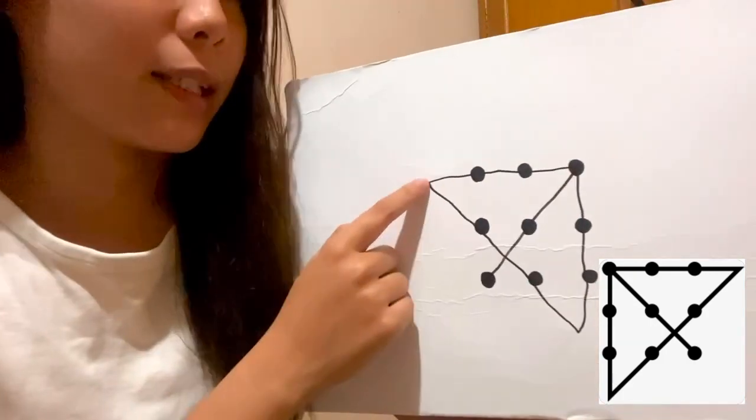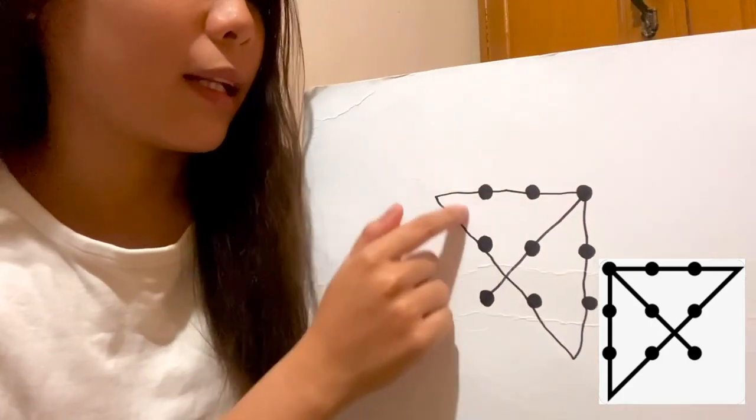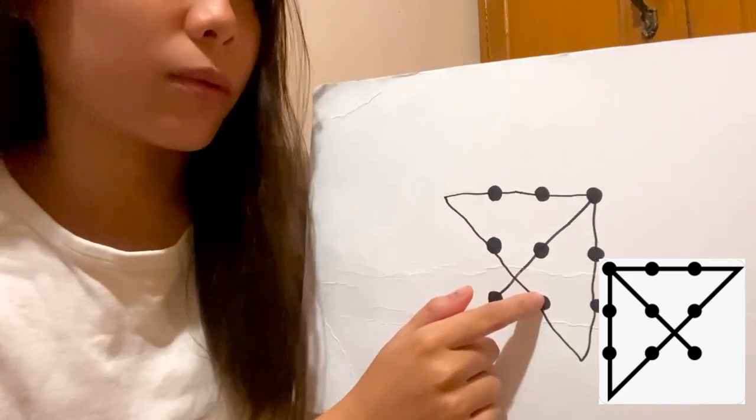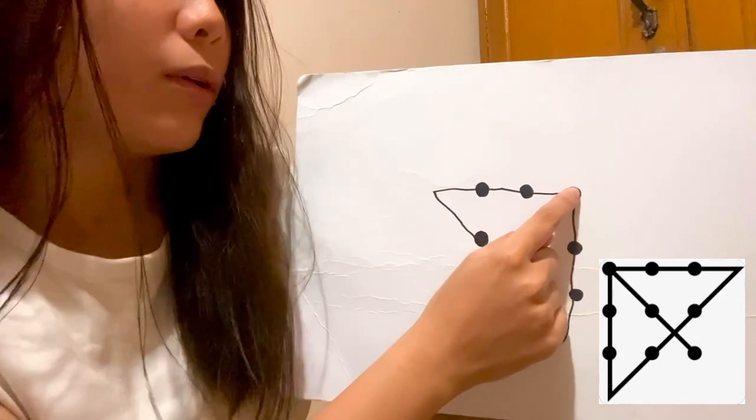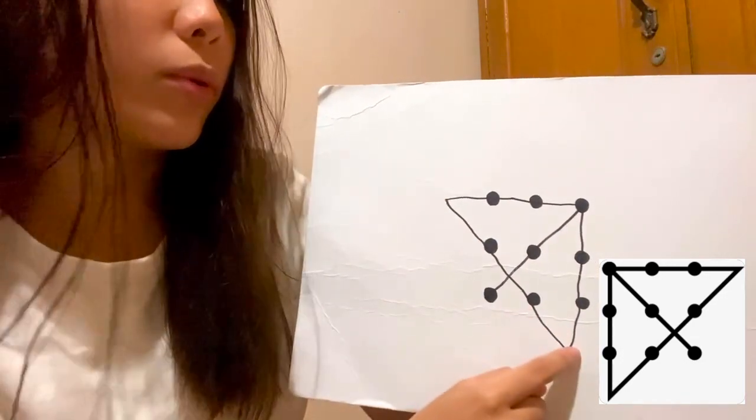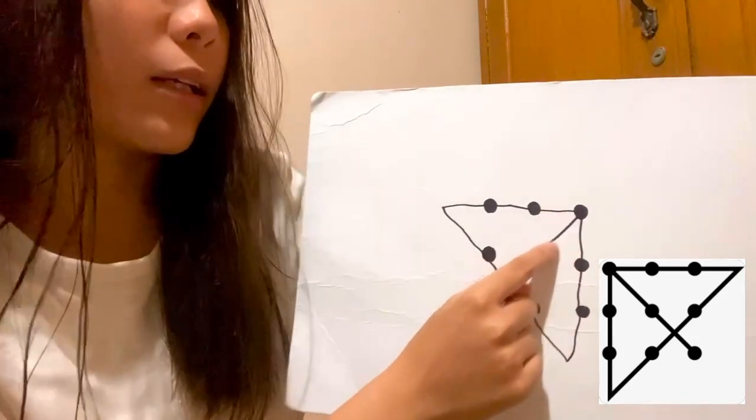With the nine dots, we were able to place four lines without lifting our ballpen. We started here. One, two, three, four.